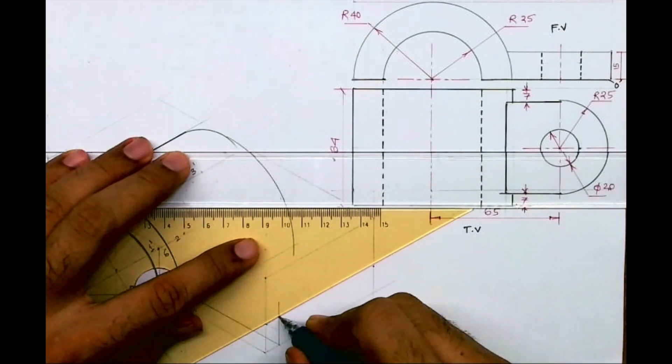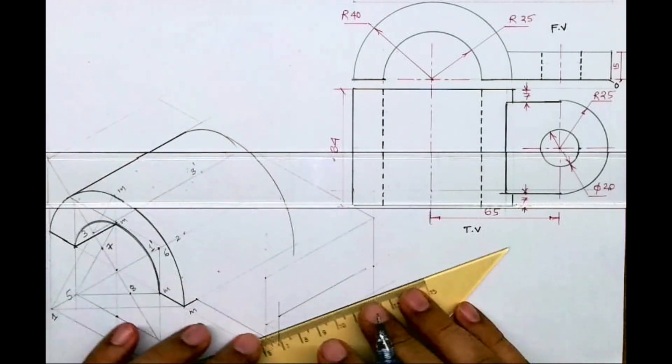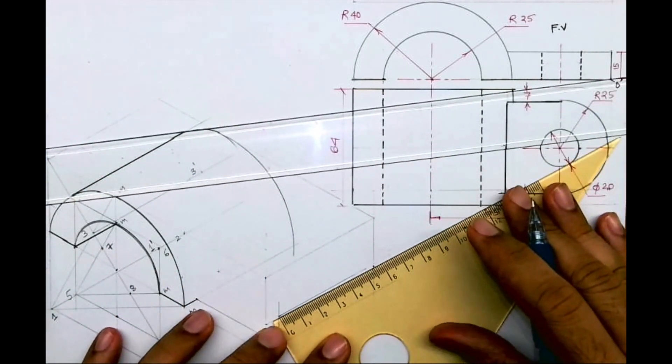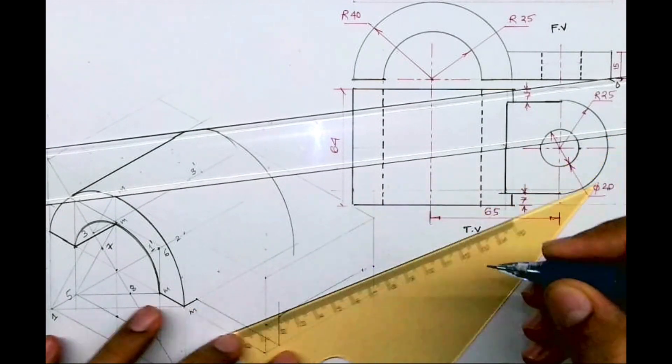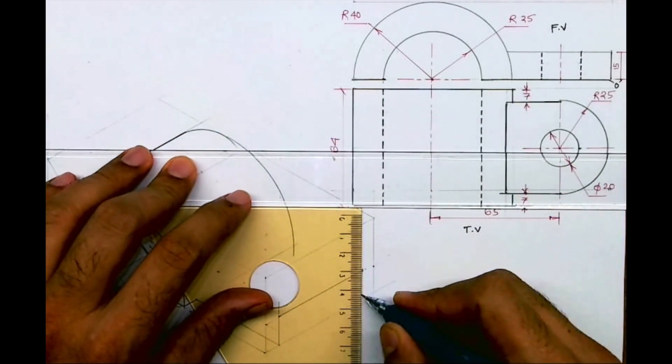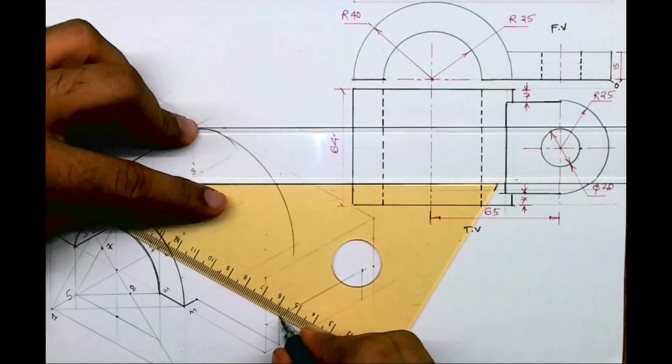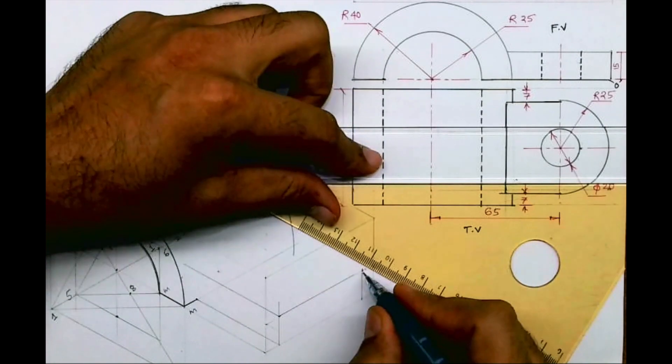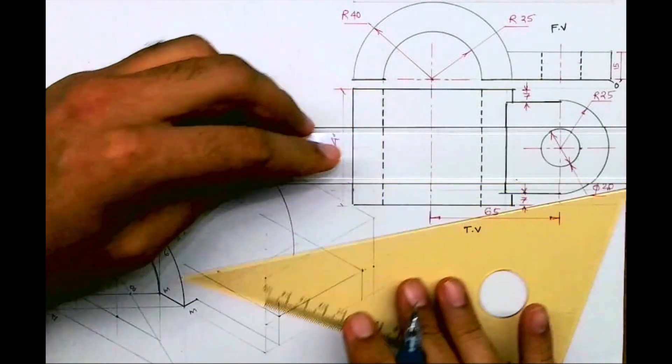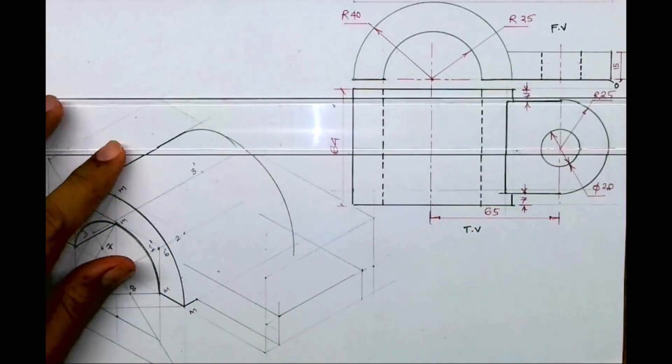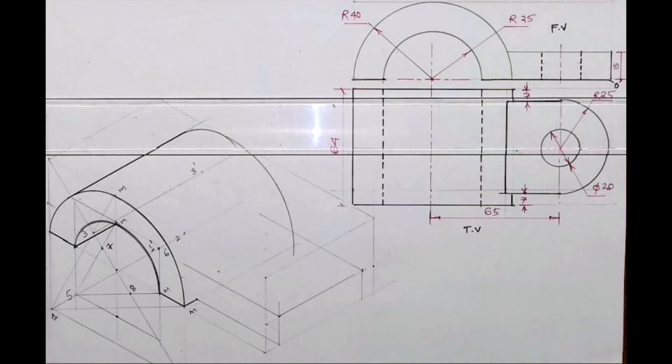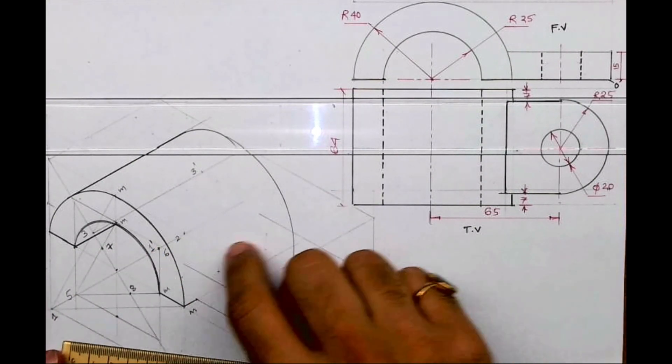This is 50. So you cut 50 on this. Then you draw a vertical line. And then you extend from here. Same way you extend from here as well. Now what we need to do, we need to draw that arc. If you see it's 7.